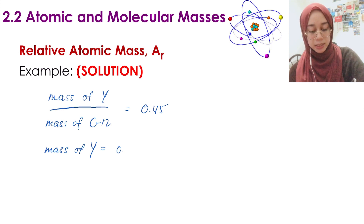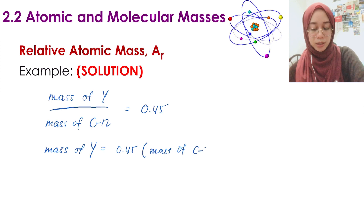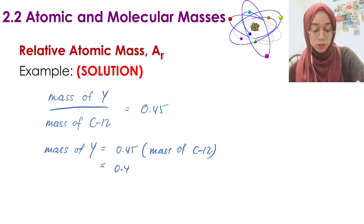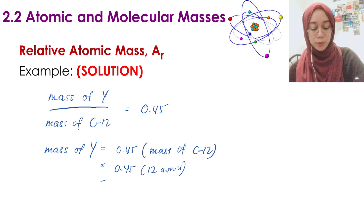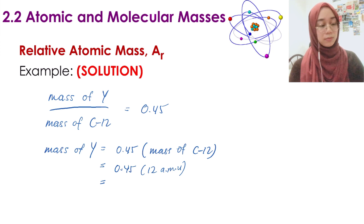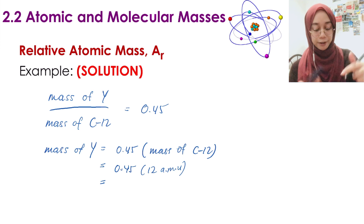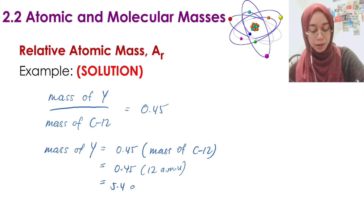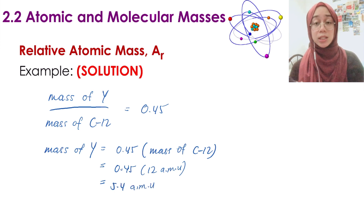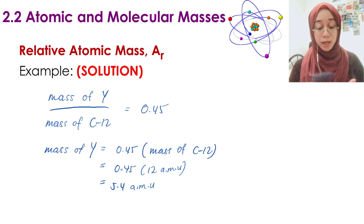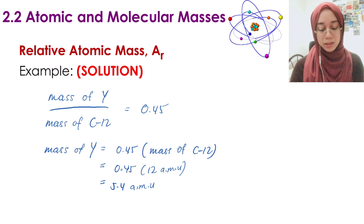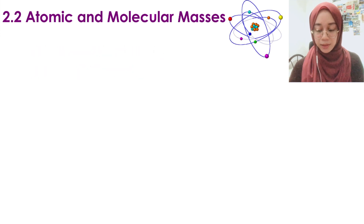Example: Determine the relative atomic mass of element Y if the mass ratio of atom Y to carbon-12 atom is 0.45. So we want to find Ar of Y. The information given is that the mass ratio of Y to the carbon-12 atom is 0.45.